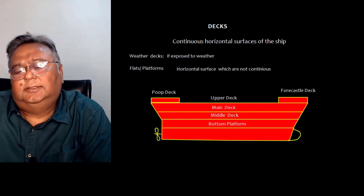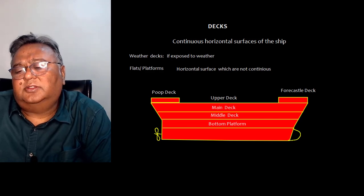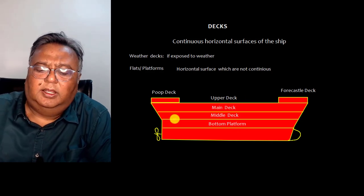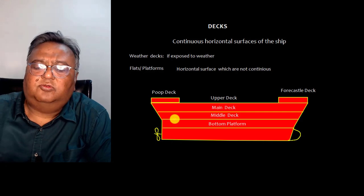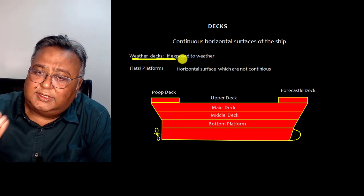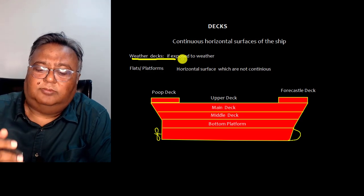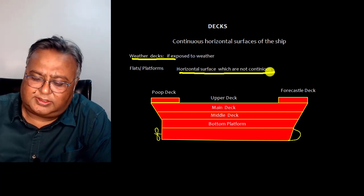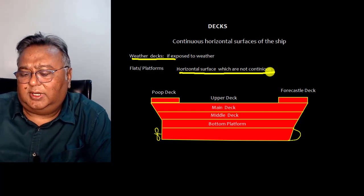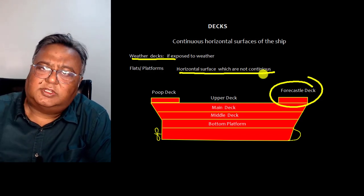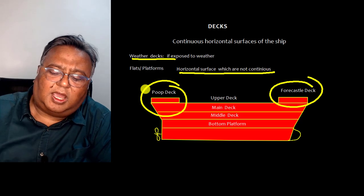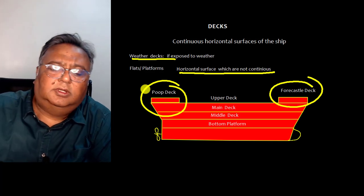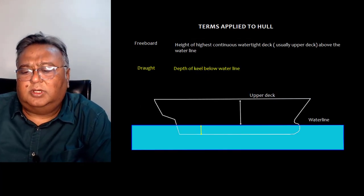Now let's talk about decks. Decks are continuous horizontal surfaces of the ship. The ship is divided into various decks: bottom platform, middle deck, main deck, and upper deck. The deck exposed to weather is called the weather deck. There is a difference between decks and platforms or flats — if a surface is not continuous, we call it a flat. Other decks include the forecastle deck in the forward and the poop deck in the aft, where mooring operations are carried out.